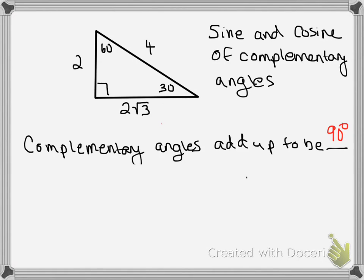I chose a 30-60-90 triangle because we've already used them and you know how to easily find the side lengths. The short leg is length 2, which means the hypotenuse has to be 4, since the hypotenuse is always double the short leg. The long leg is 2√3, because the long leg is always the short leg times the square root of 3.